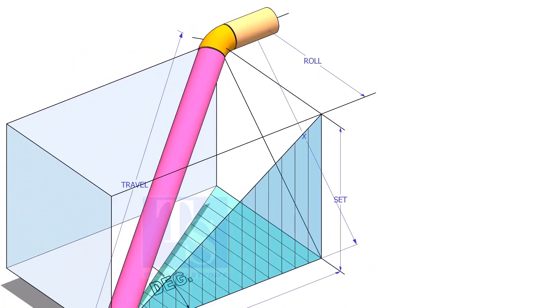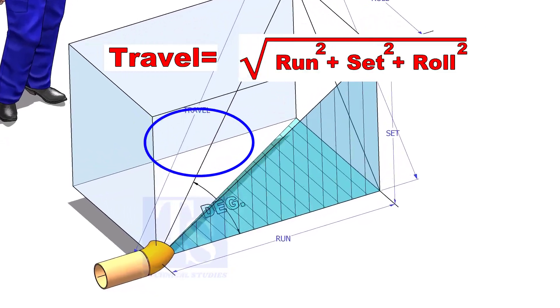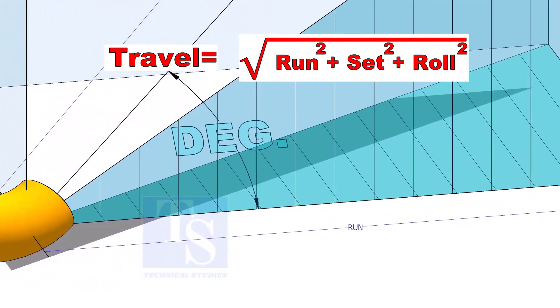The formula to calculate the travel length is the square root of the sum of run squared, set squared, and roll squared.